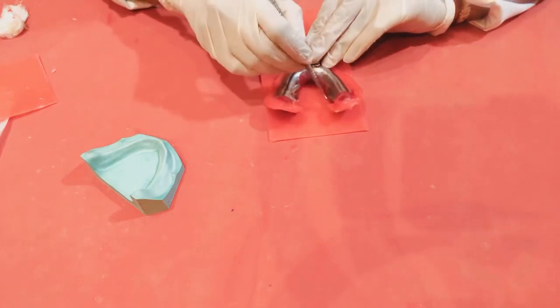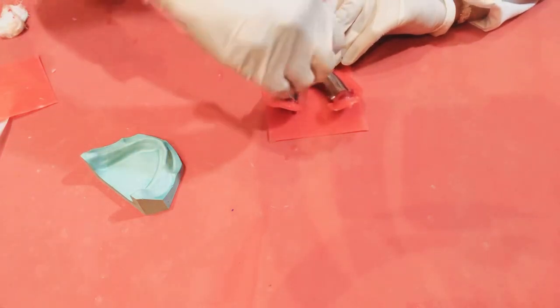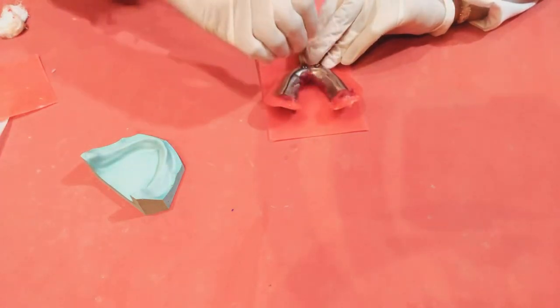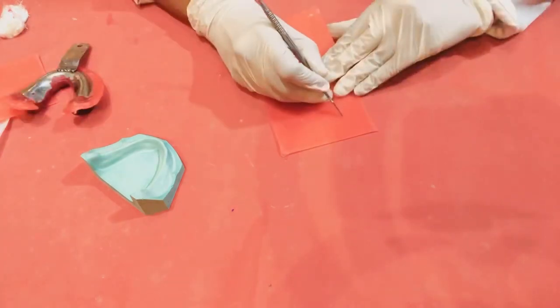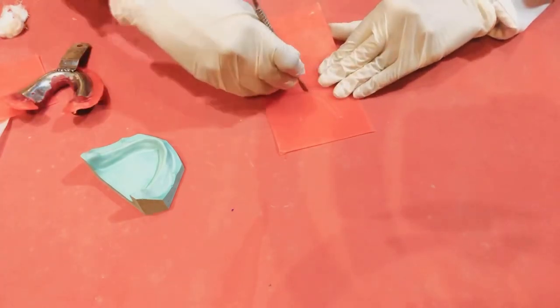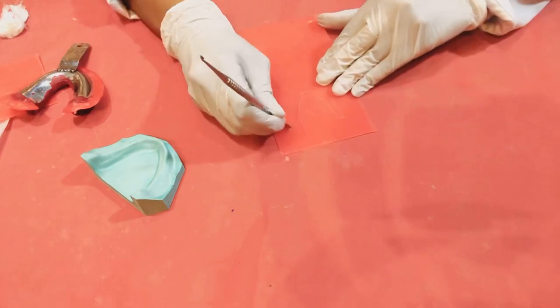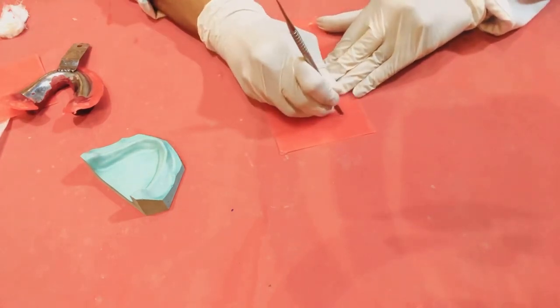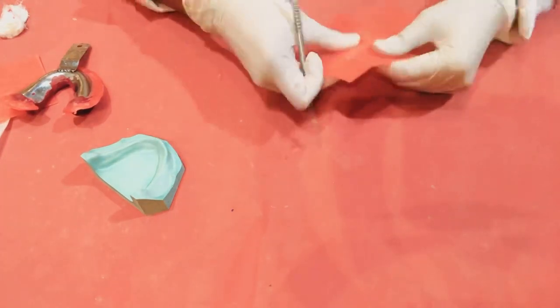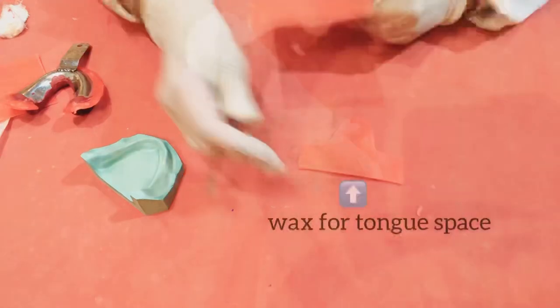Keep a wax sheet below the impression and trace the lingual outline on it. Remove the outlined portion using a lecron carver. Now the wax portion for the tongue space is ready.